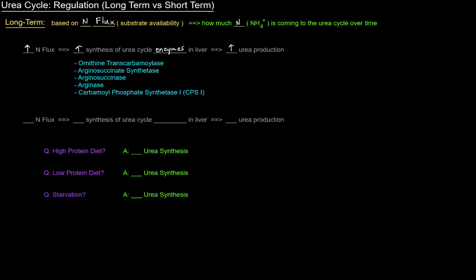So as more nitrogen comes to the urea cycle, more ammonium ions coming to the urea cycle to be processed, that will basically cause the increase in synthesis of these enzymes. So we have more enzymes around so that we can process that ammonium ion more and produce more urea.